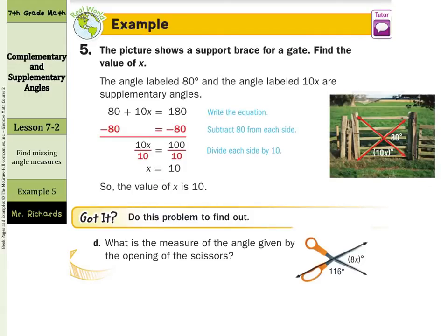And in our fifth example, the picture shows a support brace for a gate. Find the value of x. Well, these two angles, the 10x and the 80 degrees, form a straight angle, so they're supplementary. So we can set up 80 plus 10x equals 180 degrees and solve that for x. x in that example was 10.